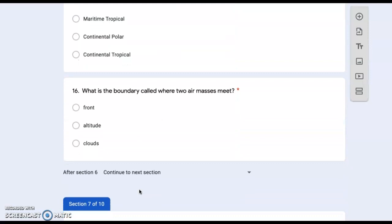Number sixteen: what is the boundary called where two air masses meet? Light, front, altitude, or clouds?